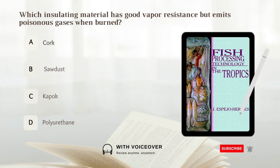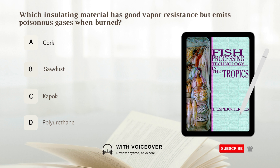Which insulating material has good vapor resistance but emits poisonous gases when burned? Options: A. Cork. B. Sawdust. C. Kapok. D. Polyurethane.